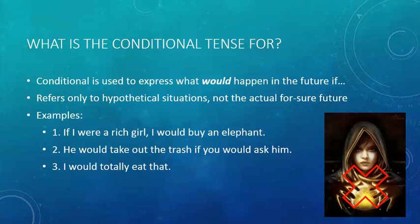Examples. In English: if I were a rich girl, I would buy an elephant. 'I would buy an elephant' is an example of conditional tense in English. He would take out the trash if you would ask him. I would totally eat that.